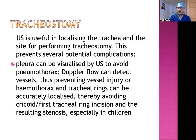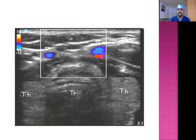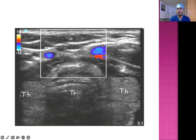The fourth usage of sonography is guidance for tracheostomy. Ultrasound is useful in localizing the trachea and the site for performing tracheostomy, thereby preventing complications such as pneumothorax and inadvertent vessel injury causing hemothorax. Tracheal rings can be accurately localized, thereby avoiding the cricoid and the first tracheal ring incision, which can result in stenosis. Vessels in the pretracheal fascia can be identified, and needle placement can avoid those vascular areas to prevent bleeding complications.